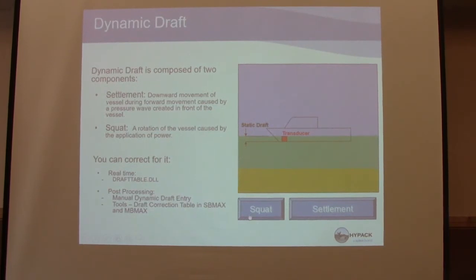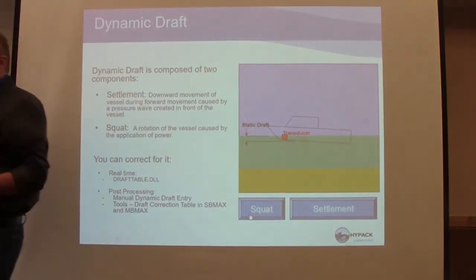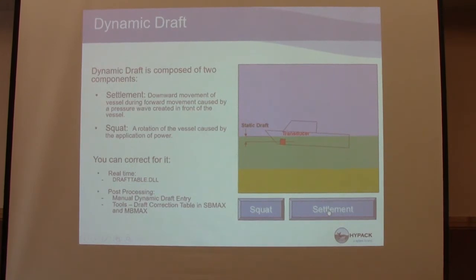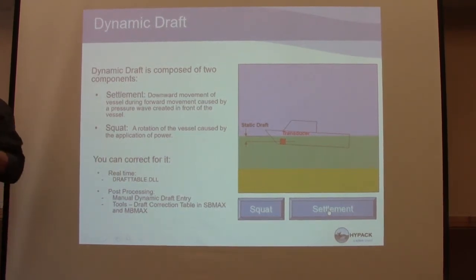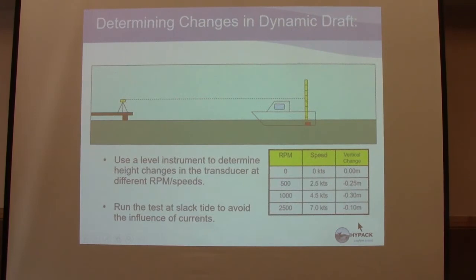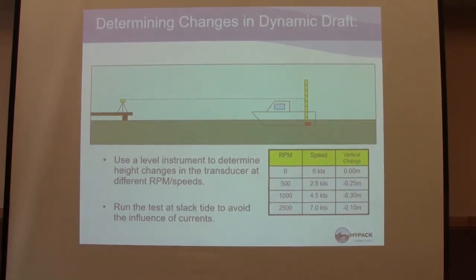Dynamic draft: as the boat moves through the water, the boat's draft changes because the boat pitches up — then you have squat and settlement. The draft table DLL is where you put in speed and draft — the adjustment is based on speed. One method uses a total station to shoot the boat to see what the level change was. Not many people have a total station, and it's difficult to shoot a moving boat.